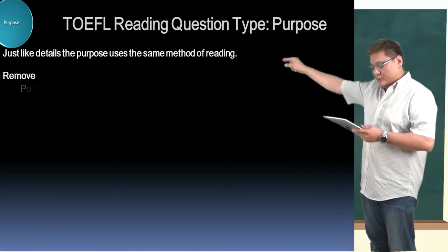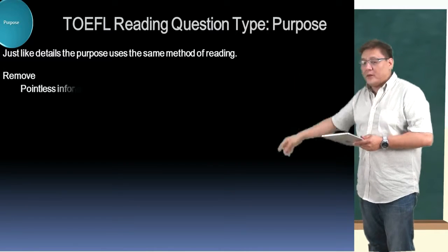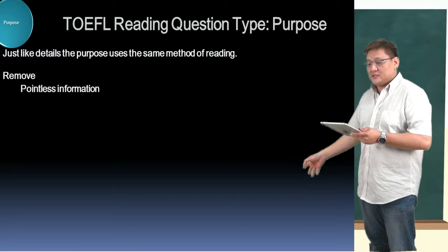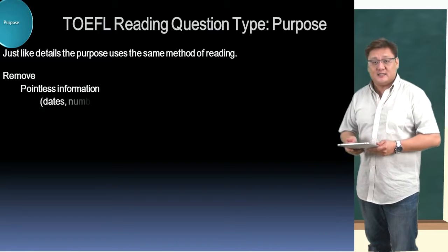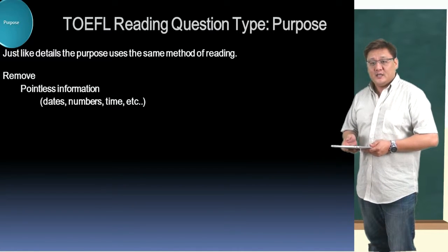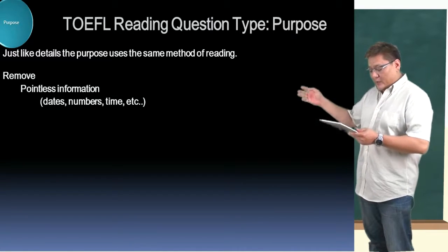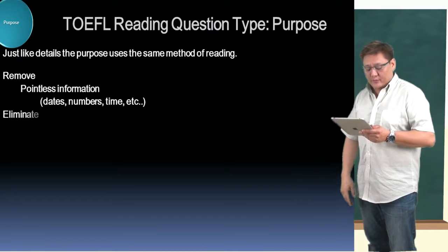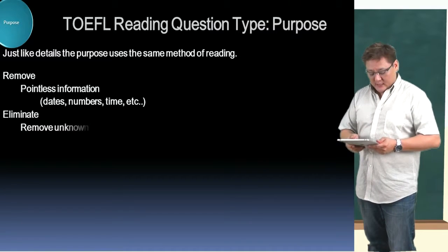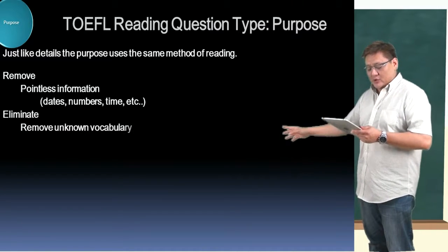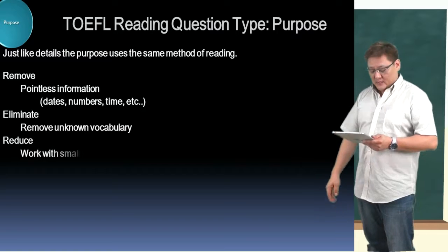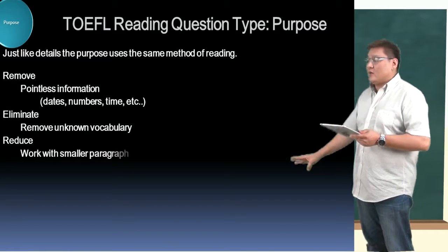So first, we're going to remove pointless information — dates, numbers, time, sizes, and stuff like that. Then we're going to eliminate and remove unknown vocabulary. Then we're going to reduce and work with a smaller paragraph. And then we're going to outline.